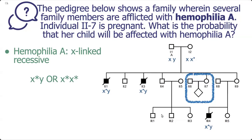If a child is going to have Haemophilia A, there are two genotypes that could lead to that: either a male with one Haemophilia A mutation, or a female with two — because this is X-linked recessive. However, the dad, individual 2-6, doesn't have Haemophilia and would not be able to pass on a mutated X to his daughter. Therefore, that option is not possible, so we solve only for the probability that the child has the genotype X star Y.